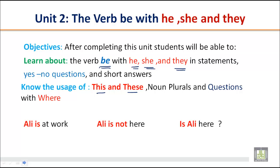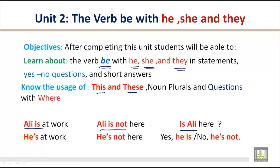Now let us see how we use he, she, and they in statements. Ali is at work. Ali is not here. If we have to say something more about Ali, instead of repeating his name we say 'he'. He is at work. He is not here. And if we have to frame a question: Is Ali here? Yes, he is. No, he is not.